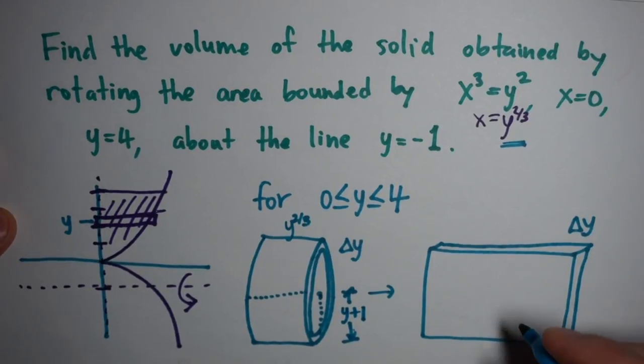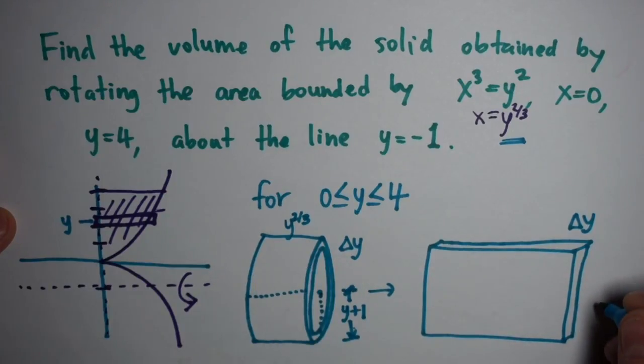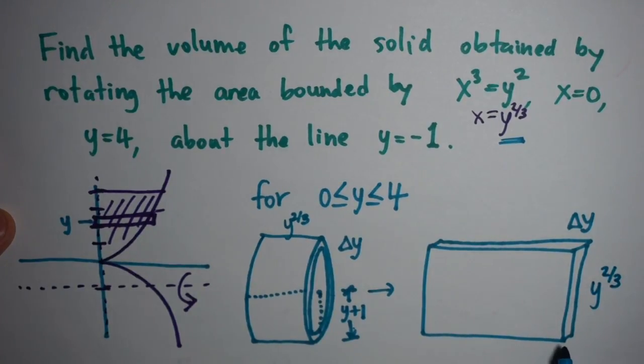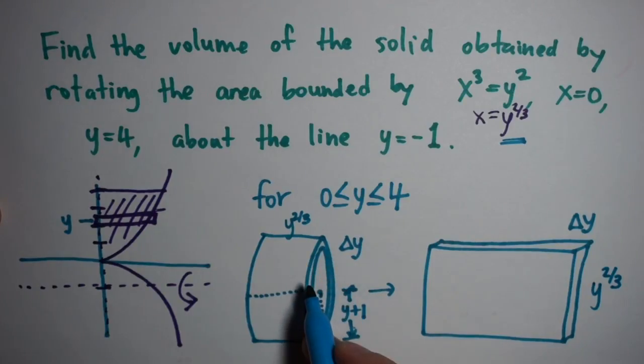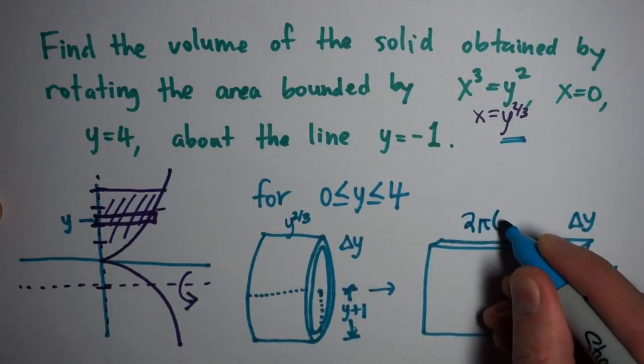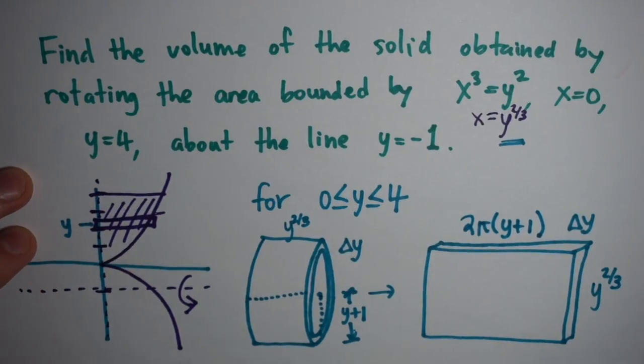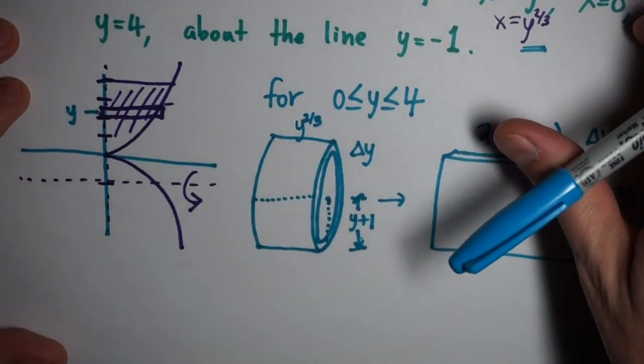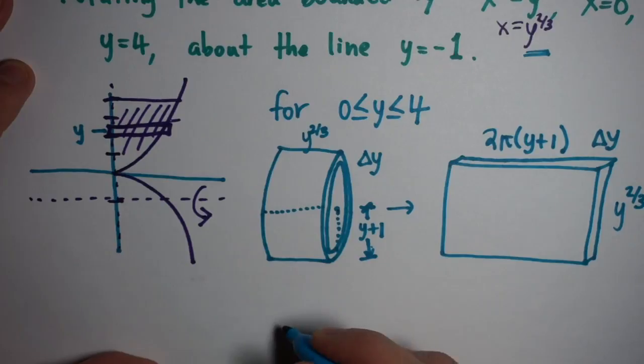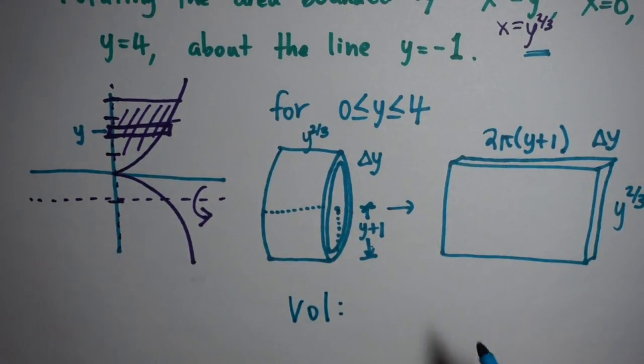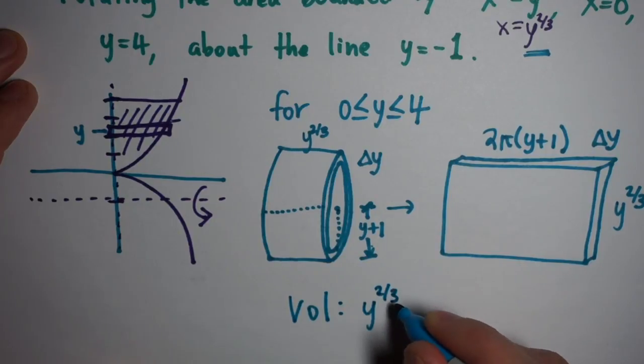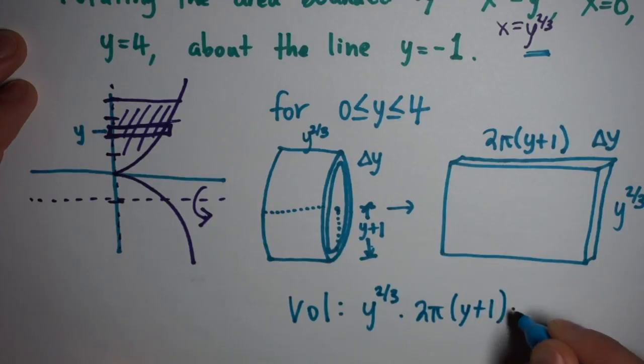With these dimensions, we can find the dimensions of the rectangular solid. This y^(2/3) is one of the sides. The longer side comes from the circumference of the solid. Because the radius is y + 1, the circumference will be 2π(y + 1). With these three dimensions, we can find the volume. For any particular y value between 0 and 4, the volume is given by the three dimensions multiplied together: y^(2/3) · 2π(y + 1) · Δy.